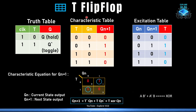Now looking at the T flip-flop: when the positive edge of the clock comes, if T is 0, the flip-flop holds its previous state as output — it will not change. When T is 1, it toggles the state — it will change its output.